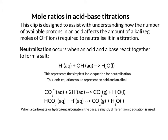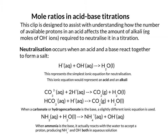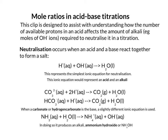If your base is a carbonate or a hydrogen carbonate, you employ a slightly different ionic equation. Ammonia is a slightly different base in the sense that it reacts with water to accept a proton, just like any other base would, but it produces NH₄⁺ and OH⁻ in aqueous solution — producing an alkali called ammonium hydroxide, or NH₄OH.